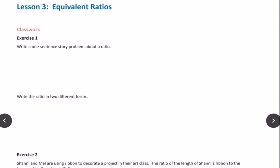This is Module 1, Grade 6, Lesson 3 for Eureka. In the first part, Classwork, Exercise 1, they're asking you to write a one-sentence story problem about a ratio. That problem would be a sentence that included 'for every' or 'the ratio of something to something.' Remember that you're comparing two different things. Then they want you to write that ratio in two different forms — with a colon and also with the word 'to.' That's what they're looking for.